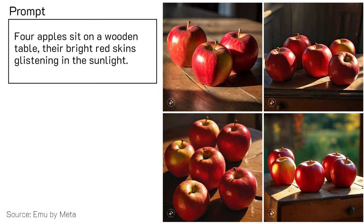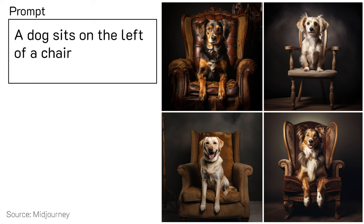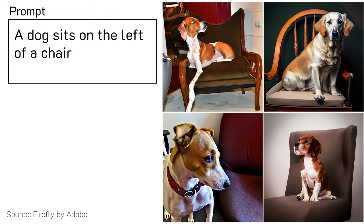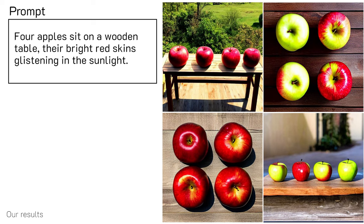They also struggle to generate images that faithfully respect the spatial composition in the text prompt. Here, almost all the dogs are sitting on the chair, not next to the chair. We present a simple method to fix this, generating correct composition and object counts.